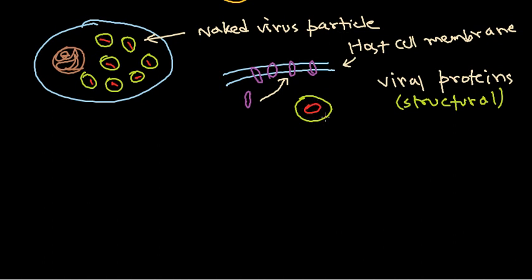This naked viral particle contains our nucleic acid inside. This particle — with the nucleic acid as well as the protein or capsid part — is called the nucleocapsid, because it has two parts: the nucleic acid inside and the capsid outside. Combined together, we call it nucleocapsid. So they produce this nucleocapsid inside the host cell.